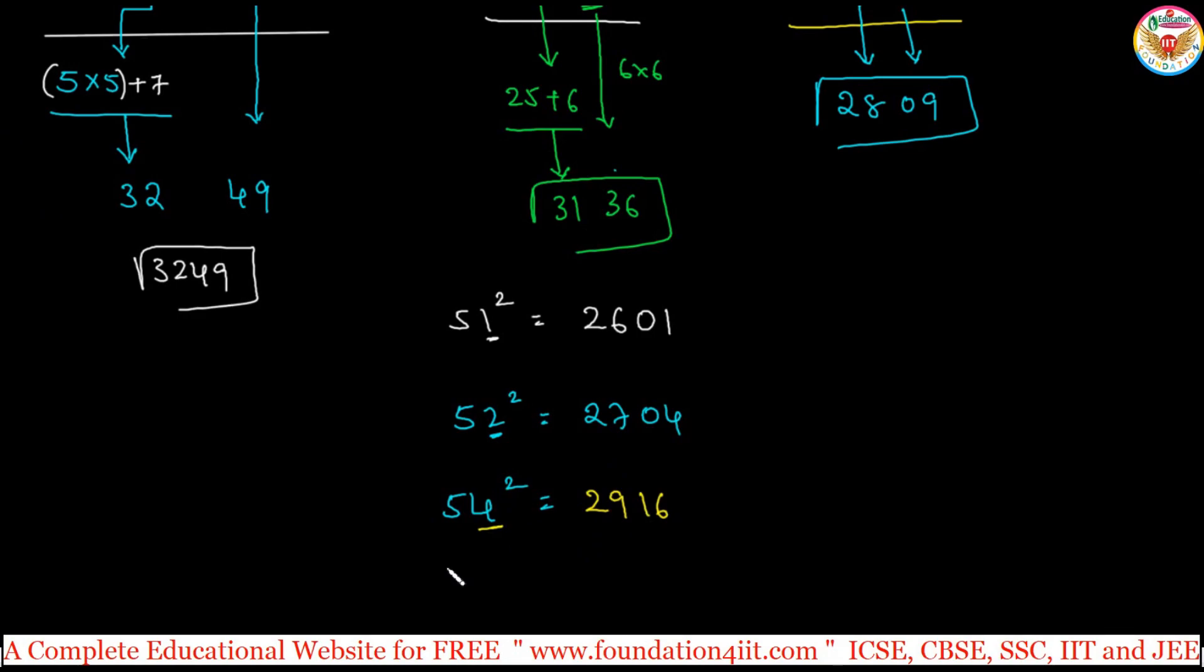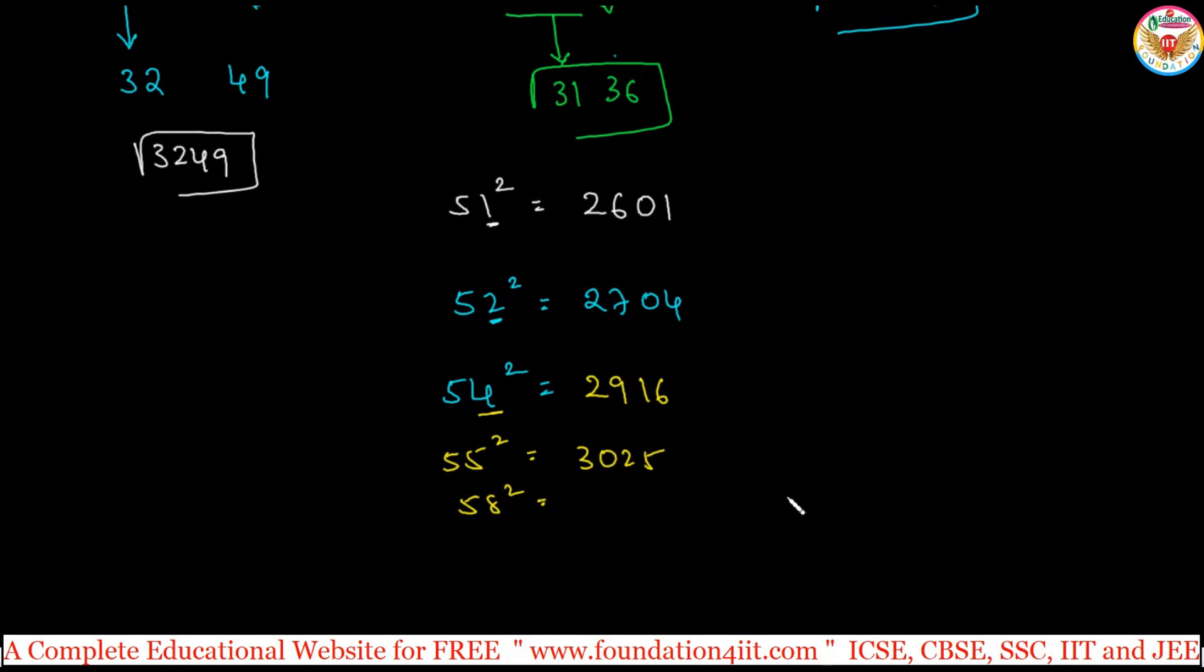Same way, 55 square: 30, 25, simple. Same way, 58 square: 5 square is 25 plus 8, so 33, and 64 because of 8 square.